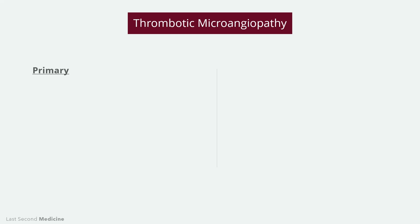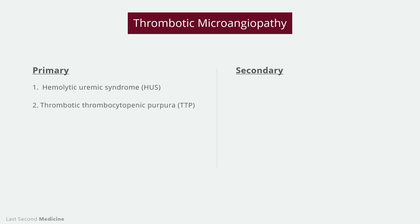Further features of thrombotic microangiopathy depend on the organ affected. Thrombotic microangiopathies are broadly categorized as primary thrombotic microangiopathies and those associated with systemic disorders. Primary thrombotic microangiopathies include two diseases: hemolytic uremic syndrome and thrombotic thrombocytopenic purpura, or TTP. For TTP, please watch our video — the link is given in the description below, and you can also access it through the link in the upper right corner of the screen.